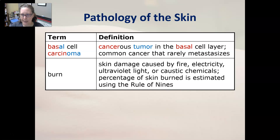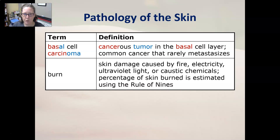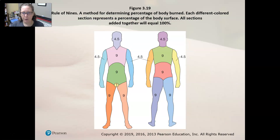A burn is skin damage caused by fire, electricity, ultraviolet light, or caustic chemicals. The percentage of skin burn is estimated using the rule of nines. You divide up the body into 10 areas that all count for nine percent, and then the groin area counts for one percent, so all together that makes 100% of the body.